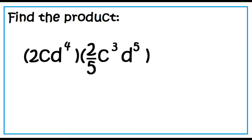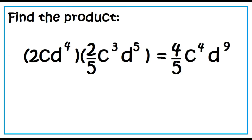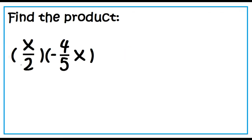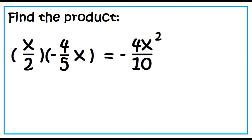2c cubed y to the power of 4 times 2 over 5 c cubed y to the power of 5 equals 4 over 5 c to the power of 4 d to the power of 9. x over 2 times negative 4 over 5 x equals negative 4x squared over 10, which in simplified form is negative 2x squared over 5.